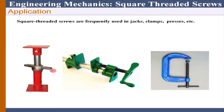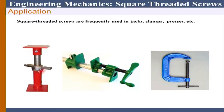A screw converts rotational motion into translational motion, and therefore it converts a torque into an axial force — that is the basic concept. Two important terms: pitch is the distance between two threads, and lead is the vertical distance moved if one complete revolution is made. These are two important aspects to keep in mind.